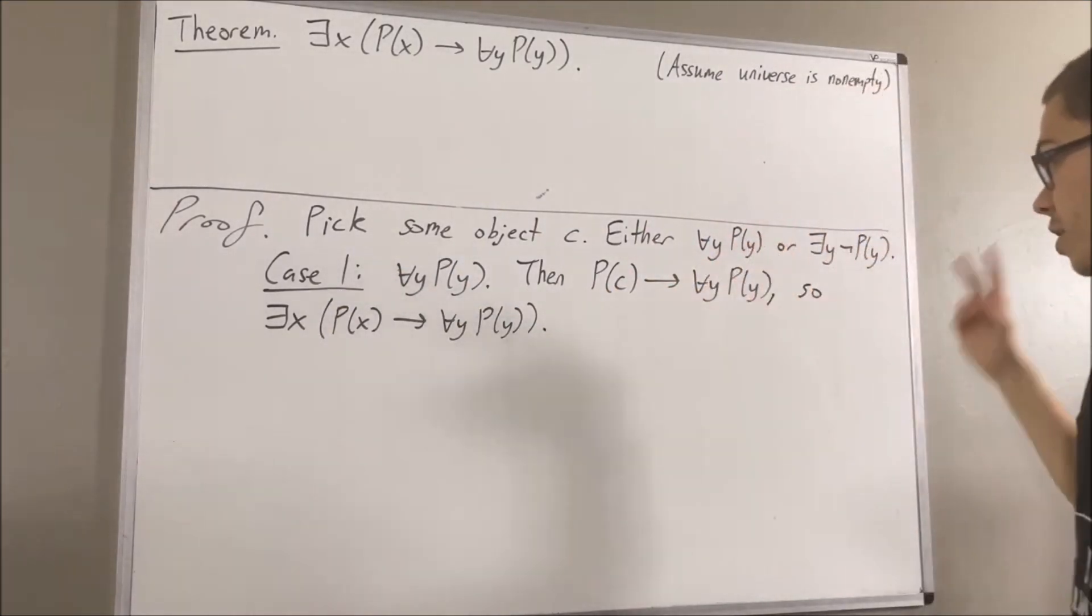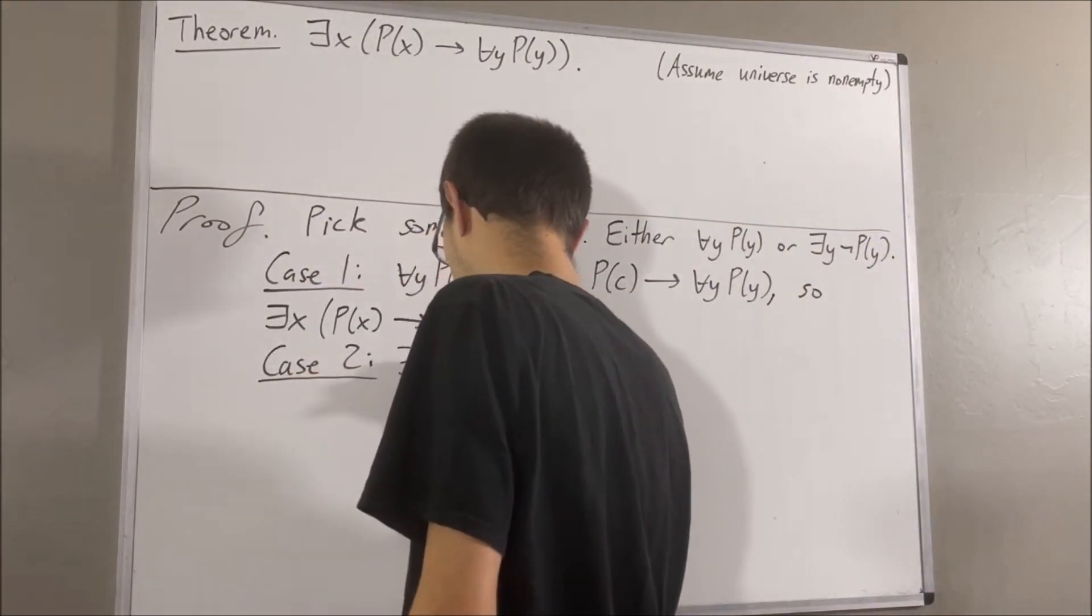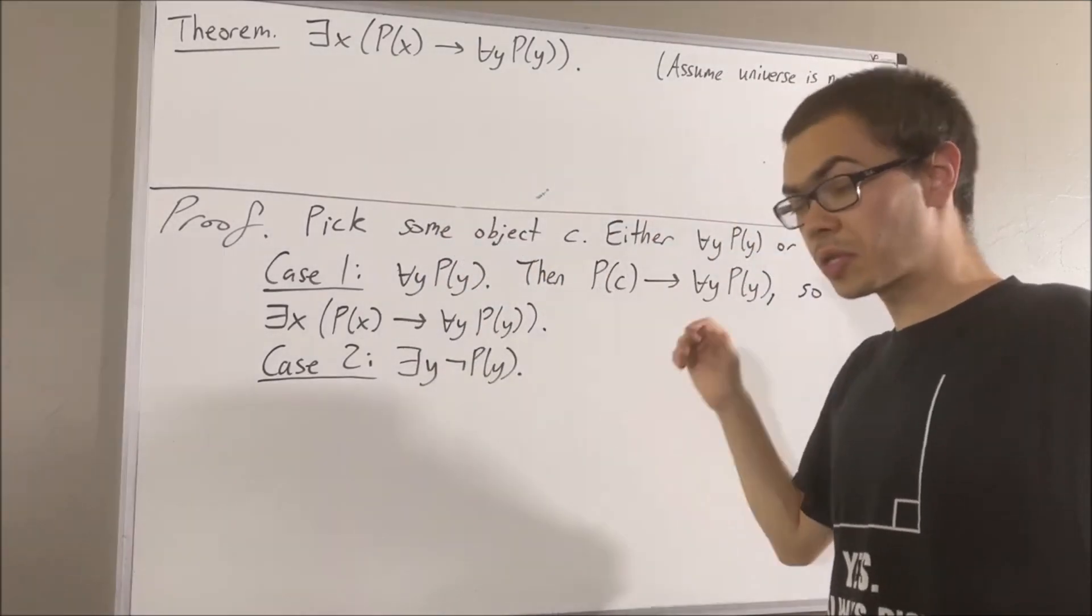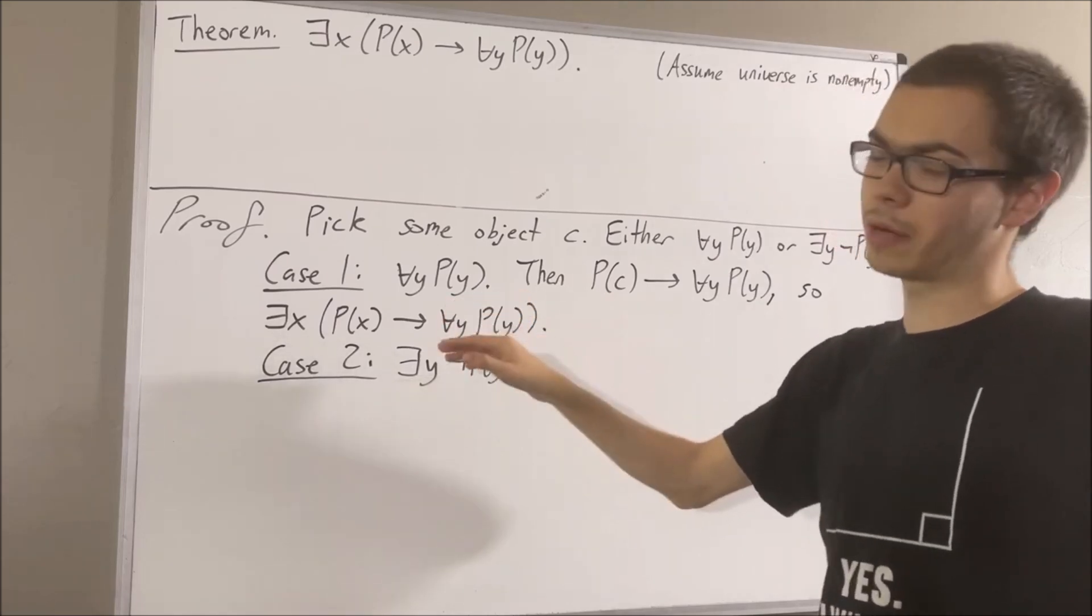Now, let's move on to case 2, where there exists a Y such that not P of Y. Well, then there is at least one object out there which satisfies not P. I'll call that object D.